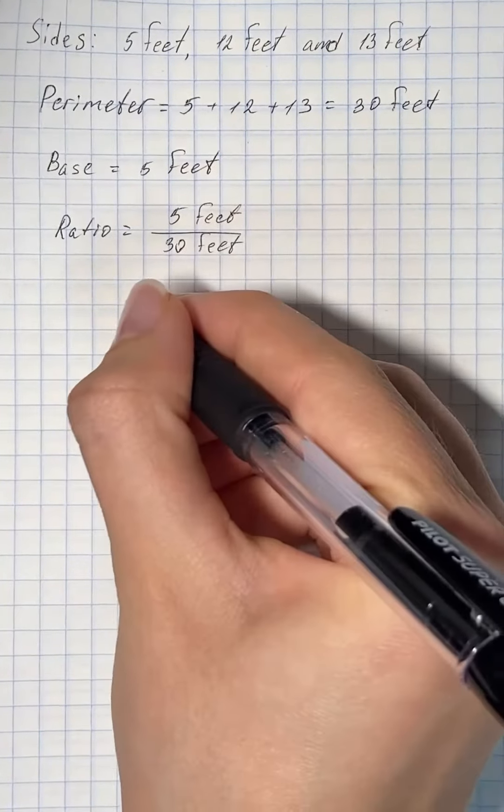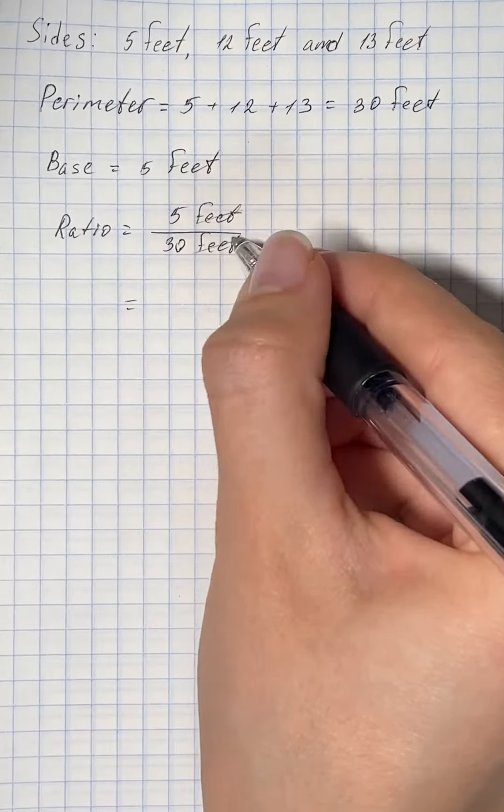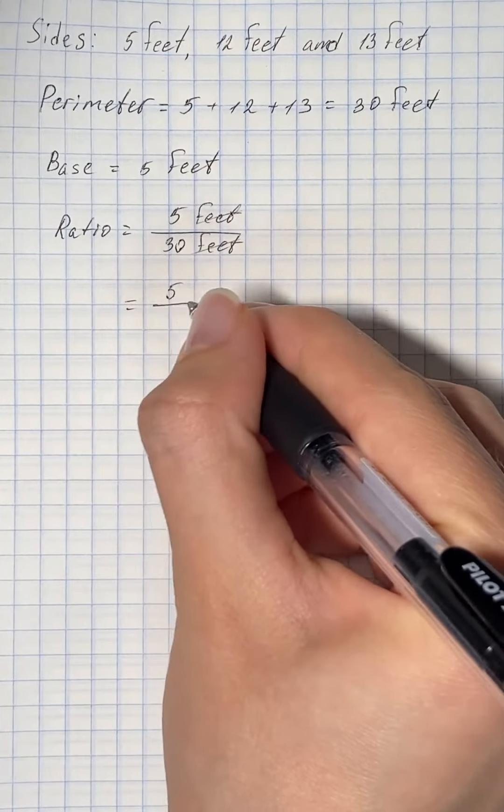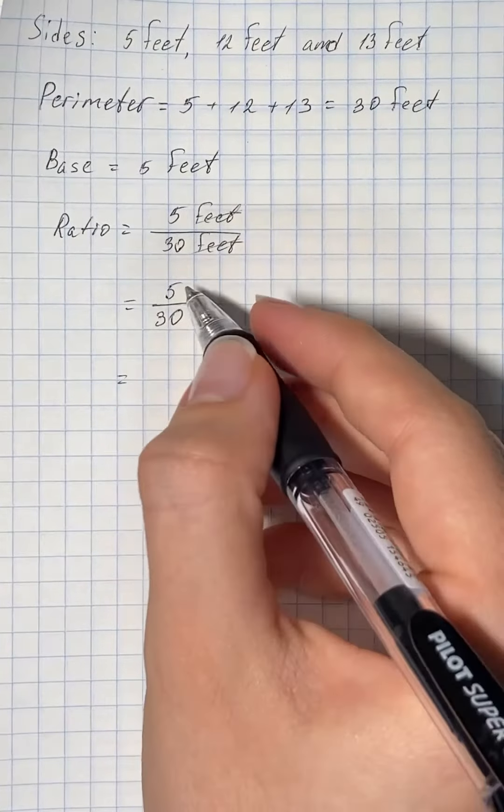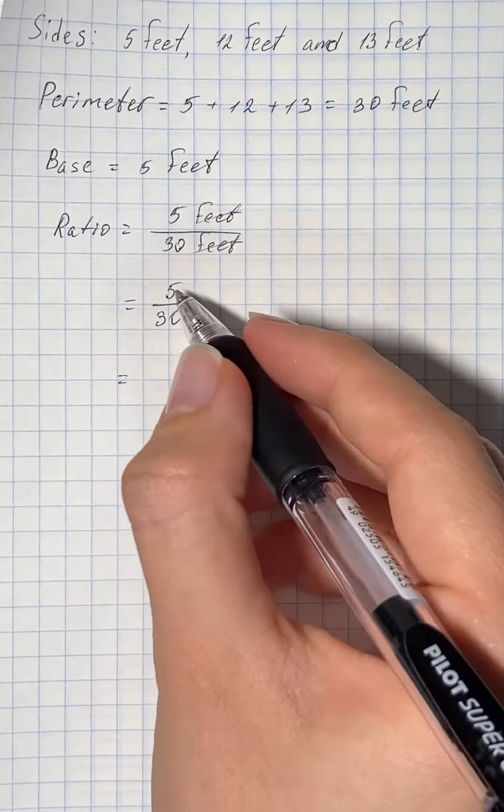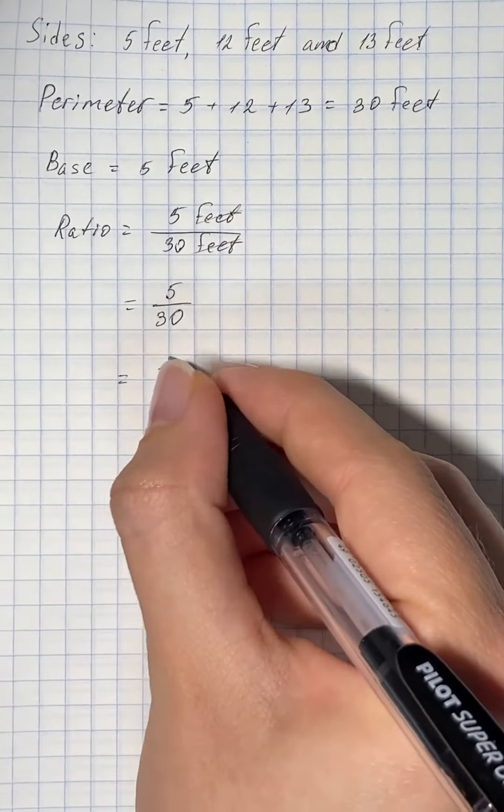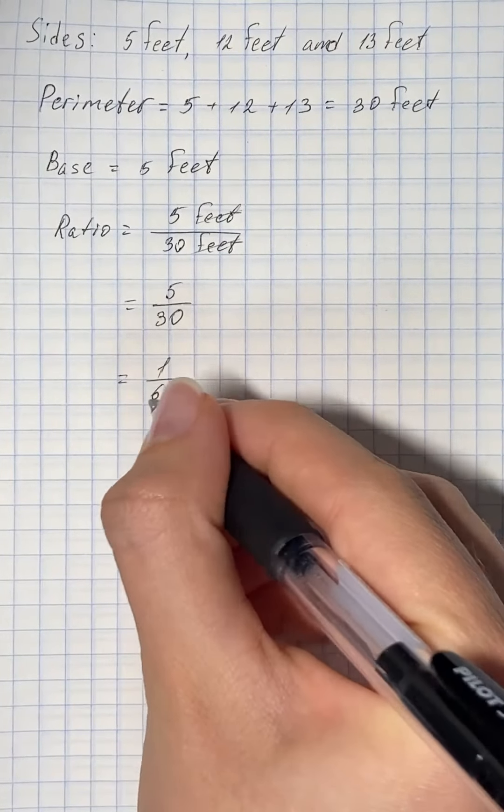And now we can divide out the common unit and get 5 over 30. And to obtain the ratio in simplest form, we're gonna divide the numerator and denominator by 5 and get 1 over 6.